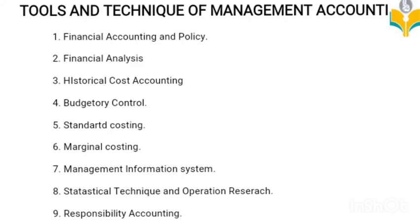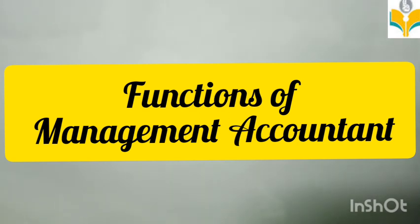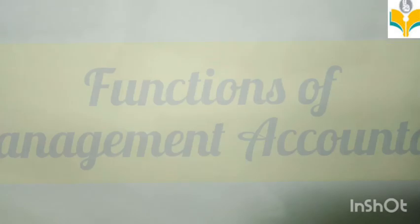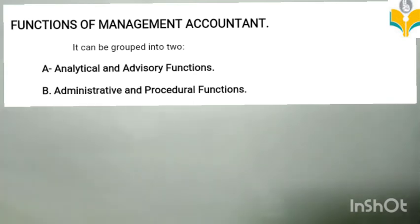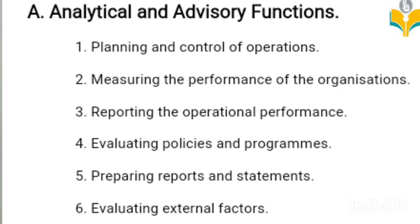Next topic: functions of management accountant. This is another important question for short essay. Functions of management accountants may be grouped into two categories: analytical and advisory function, and administrative and procedural function. Category A — analytical and advisory function includes: planning and control of operations, measuring the performance of the organization, reporting the operational performance, evaluating policies and programs, preparing reports and statements required under various laws and furnishing them to government agencies, evaluating external factors such as government policies and their impacts on business objectives, and protecting assets through internal control and proper insurance coverage.